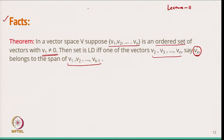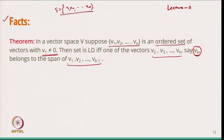The use of this theorem is: suppose someone gives me a large number of vectors V1, V2, ..., Vn and asks me to check whether the set is linearly independent or dependent. Checking by forming a linear combination becomes very difficult — we have to convert the matrix to echelon form. So if we have a 5×5 or 10×10 matrix, it is very difficult, and we can use this theorem instead.